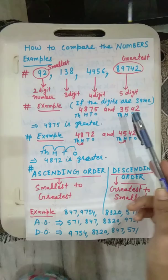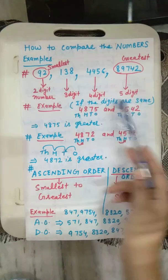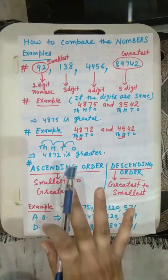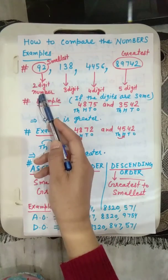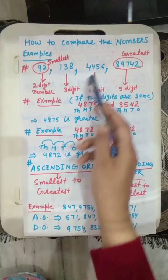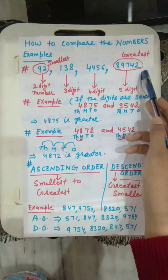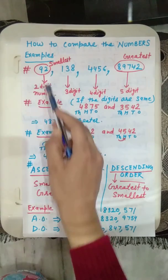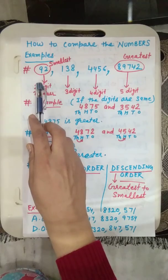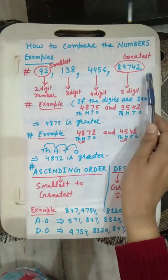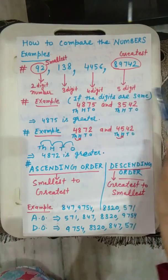On the basis of the number of digits, we can find out how to compare the numbers — which number is smallest and which is greatest. 92 is a 2-digit number, 138 is a 3-digit number, 4456 is a 4-digit number, and 89742 is a 5-digit number. So 92 is the smallest one, and 89742 is the greatest number because it has the most digits.